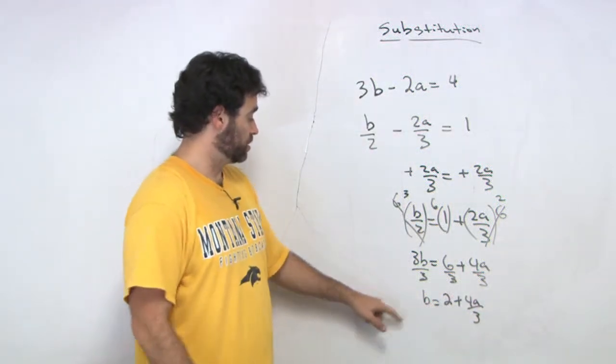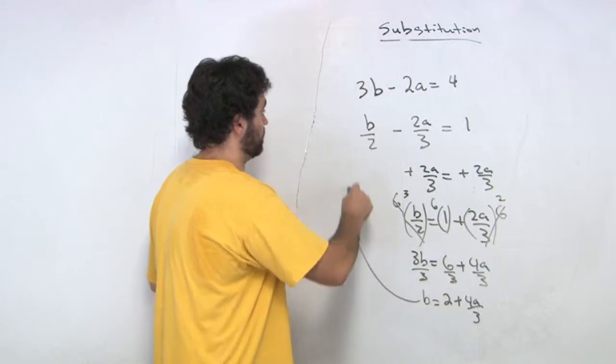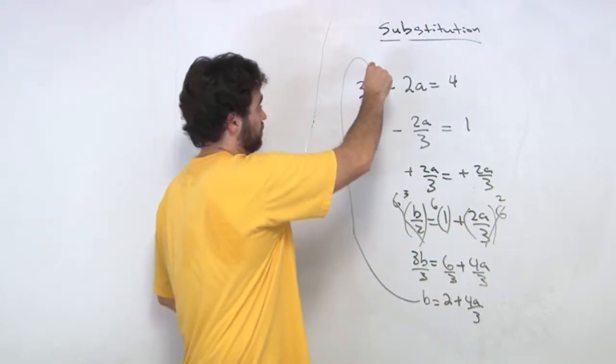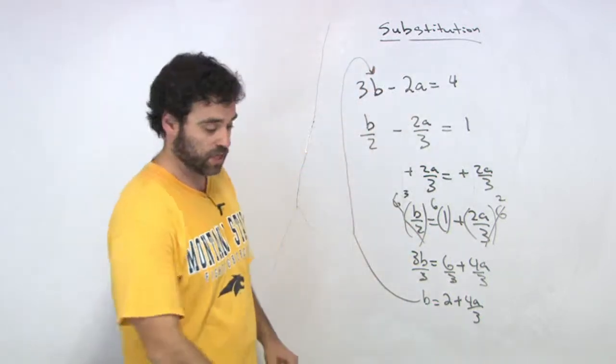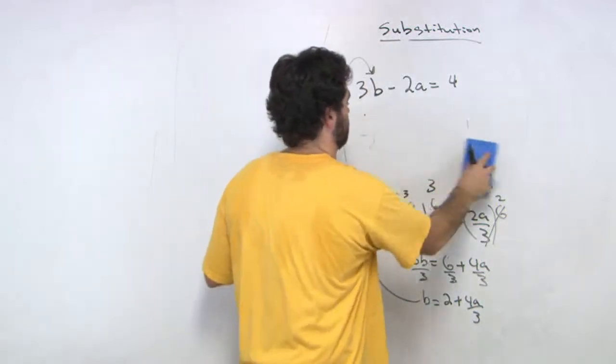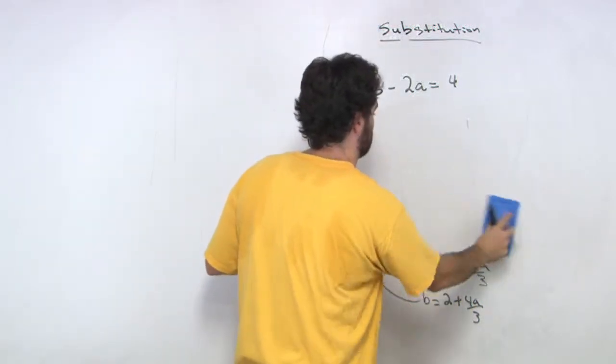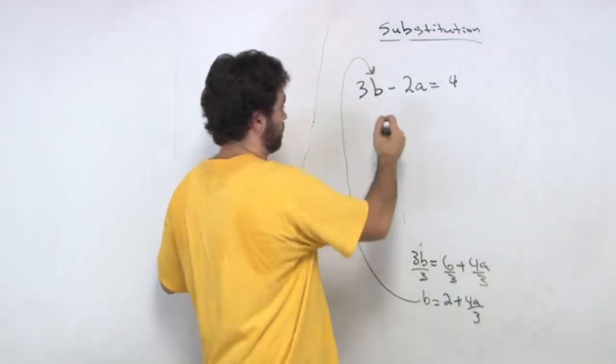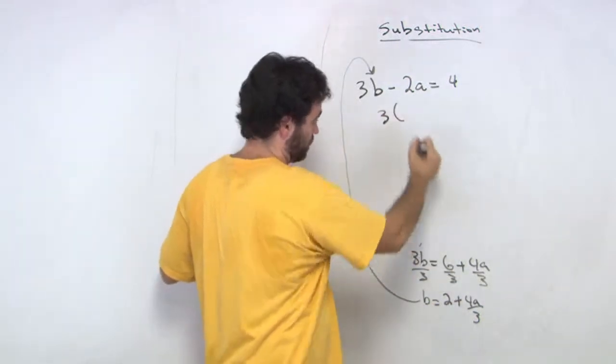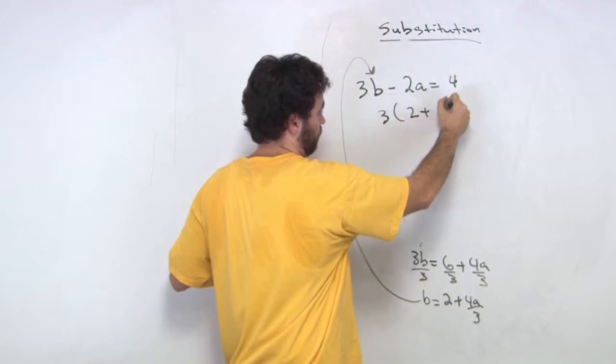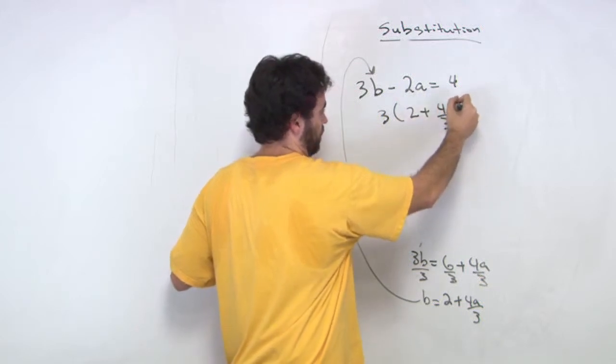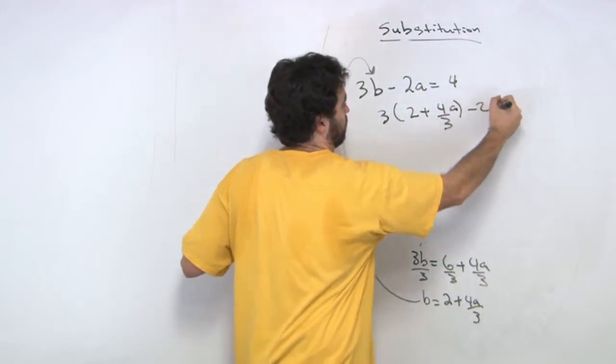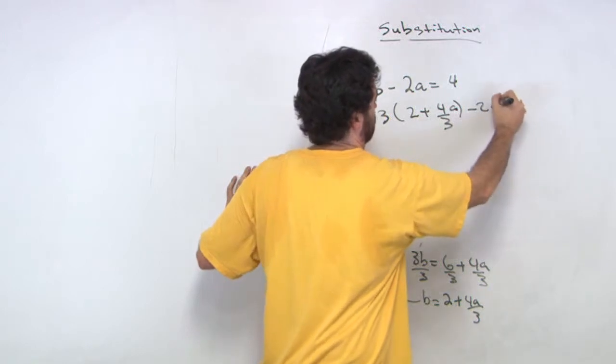Using this equation, using our b right here, we're going to replace it right in here. So let's go do that. Erasing this mess right down here. So replacing our b right in there. So we get 3 times 2 plus 4 thirds a minus 2a equals 4.